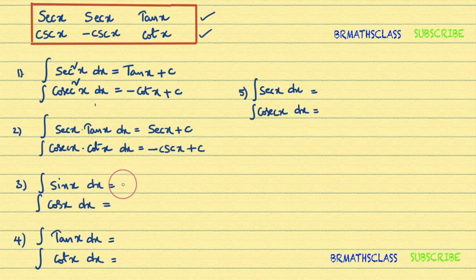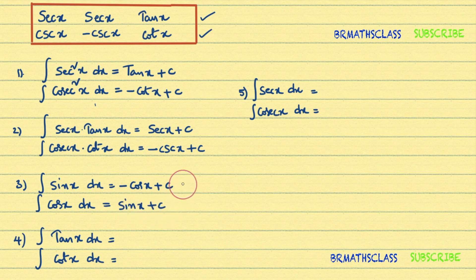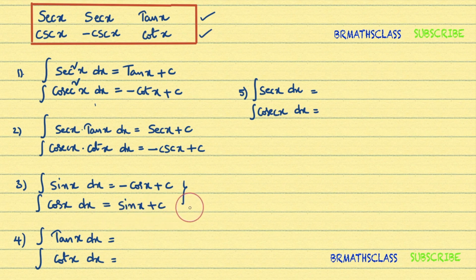Now: integral of sine x dx is minus cos x plus C. There is no special trick for this — many students easily remember it. And integral of cos x dx is sine x plus C. You need to memorize these two formulas and it is not difficult; it is very easy.